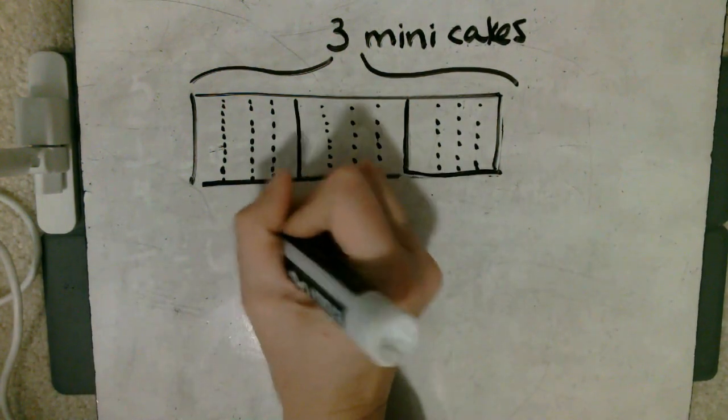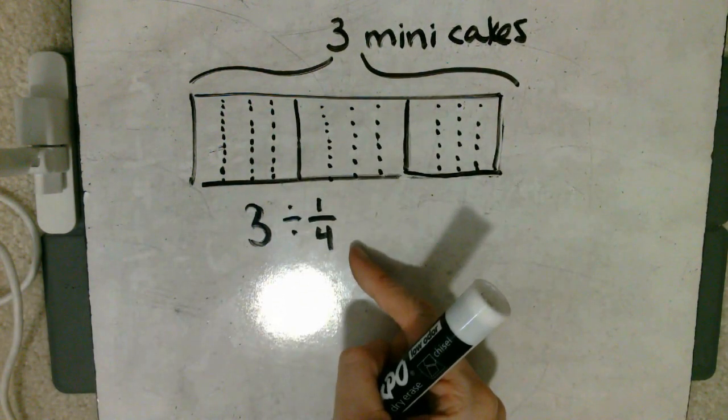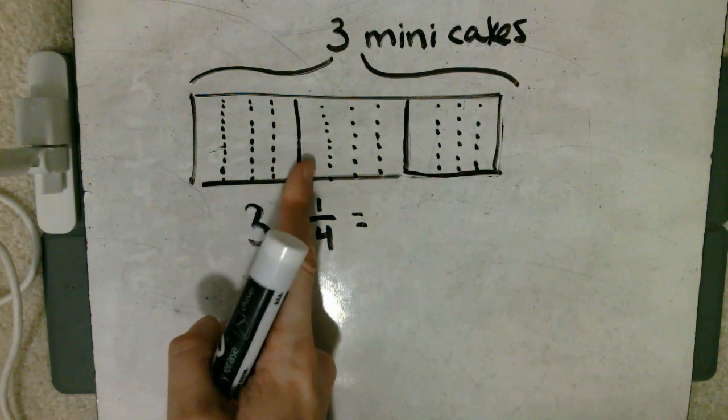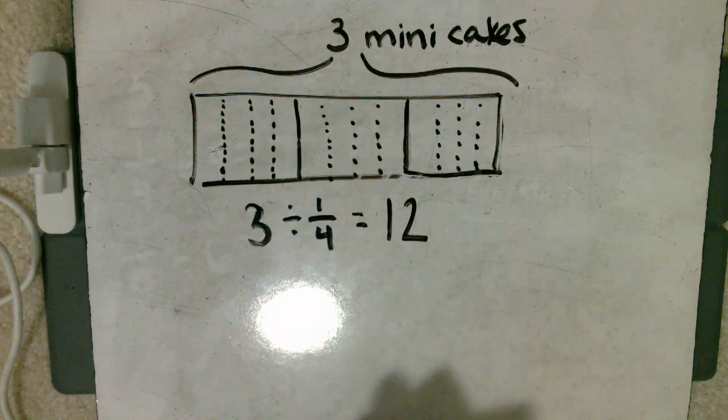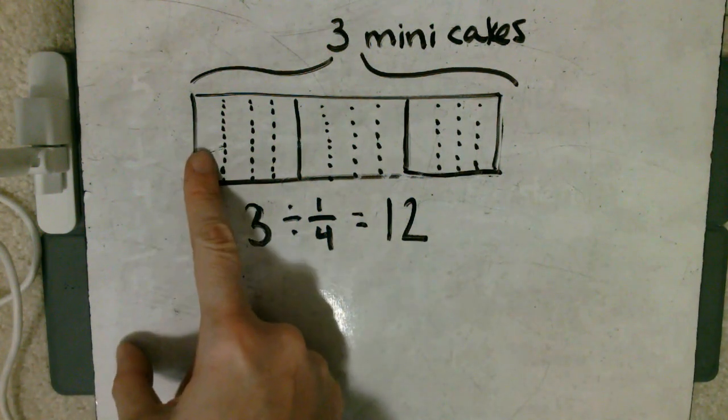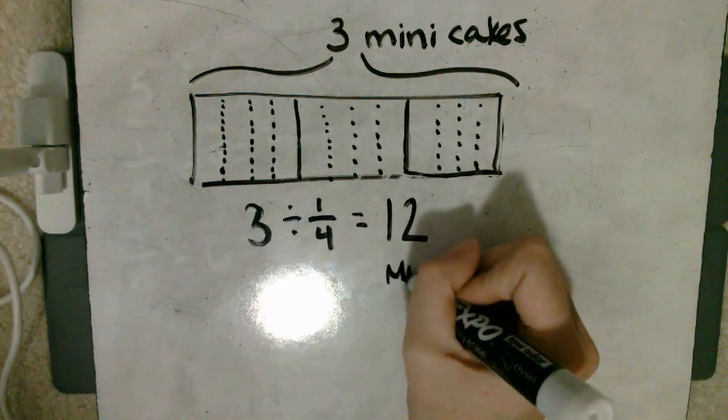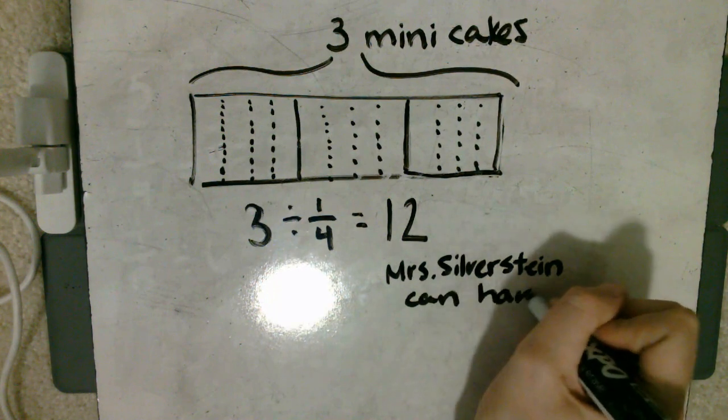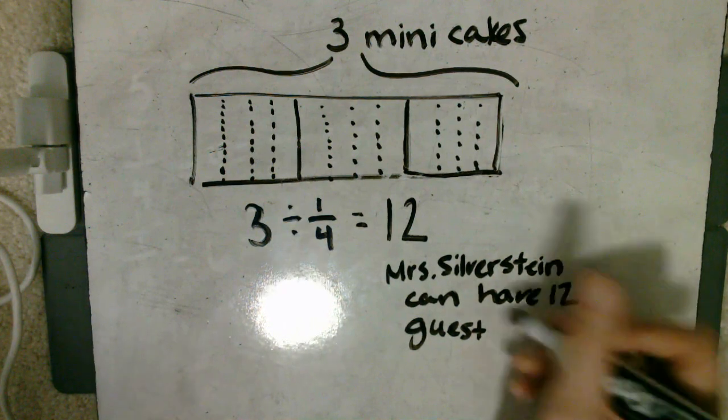Because we split each of these mini cakes into quarters and we know the total amount of mini cakes we have, I'm going to write that into an equation. We started with three total mini cakes, and we split them up—we want to divide them into quarters. Quarters is also represented by saying one fourth. Now let's see how many total pieces we got when we split it up. Count with me: one, two, three, four, five, six, seven, eight, nine, ten, eleven, twelve. We got twelve total pieces. Now our question said each guest would get one quarter slice, which means one slice equals one guest. So because we have twelve slices, we can have twelve guests at this party. Let's write that in a full sentence: Ms. Silverstein can have twelve guests.